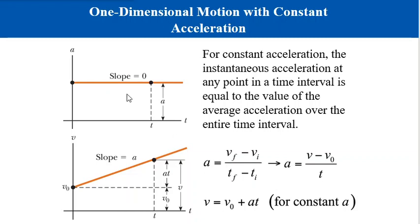The figure above shows the object moving at a constant acceleration, which is related to the graph of velocity versus time shown below. When the object is moving at a constant acceleration, the instantaneous acceleration at any point is always the same, so it is equal to the average acceleration over the entire time interval. In that case, we can remove the bar on top of the acceleration symbol.